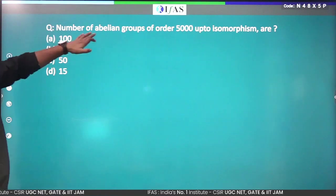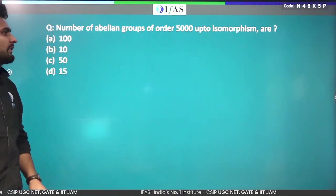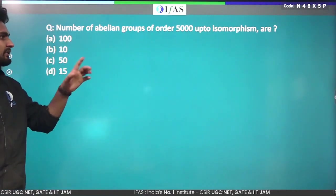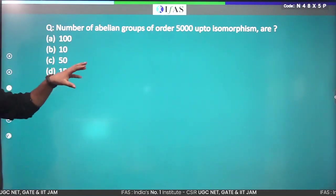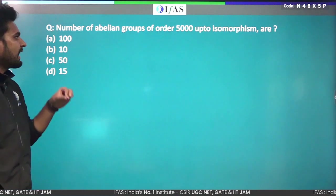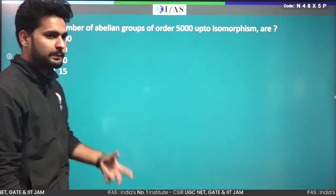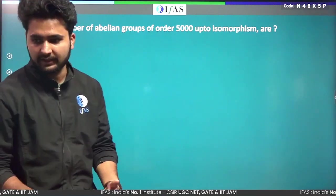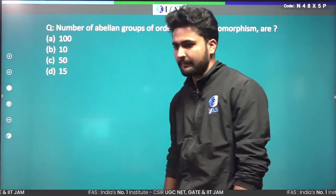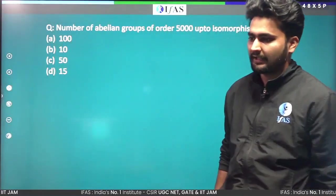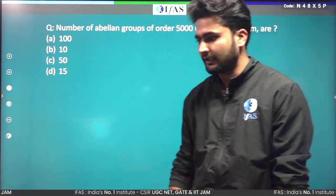For homework: find the number of abelian groups of order 5000 up to isomorphism. Comment your answer below. Thank you everyone, happy learning, take care and bye-bye.